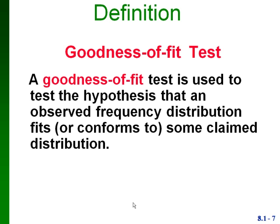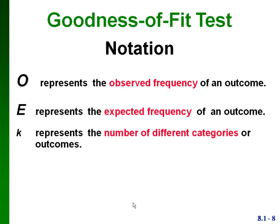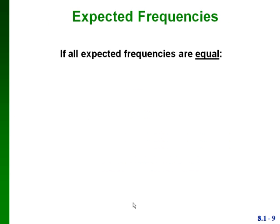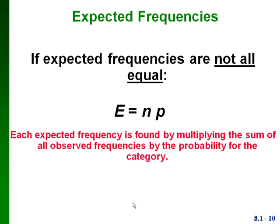Here's our goodness of fit test. We're going to use it to test the hypothesis that our observed frequencies fit some claimed distribution — in this case our multinomial distribution. The notation: O represents observed frequency, E represents expected frequency, k is the number of different categories or outcomes, and n represents the total number of trials. If all expected frequencies are equal, the expected frequency for each category is n divided by k. If they're not all equal, the expected frequency for each category is n times the probability for that particular category.